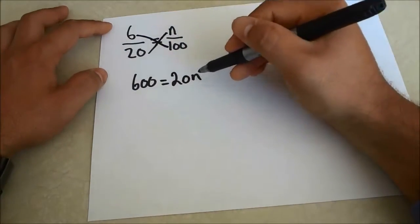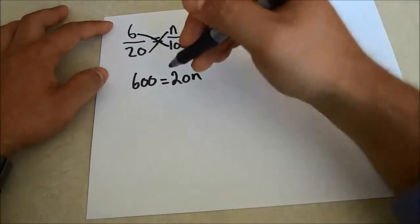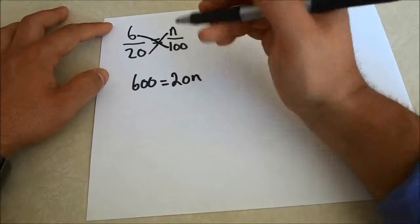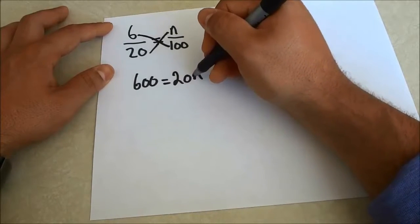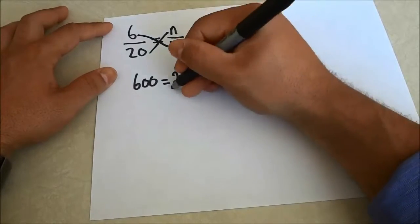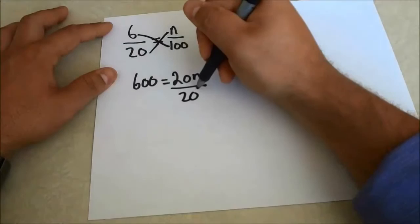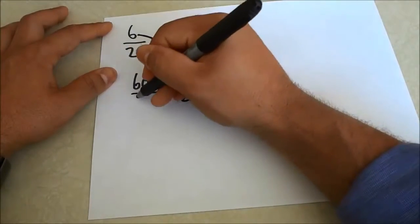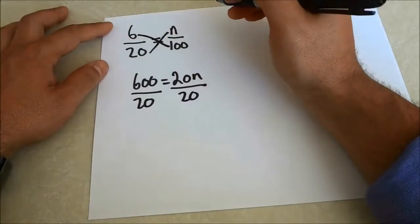Now we need to isolate for n because n will tell us what percentage it is. To get rid of the 20, you can see that it is 20n which means 20 times n. We are going to simply divide by 20 and that will get rid of it. And if we divide by 20 on this side we have to divide by 20 on this side because we have to do the same thing on both sides of the equal sign.